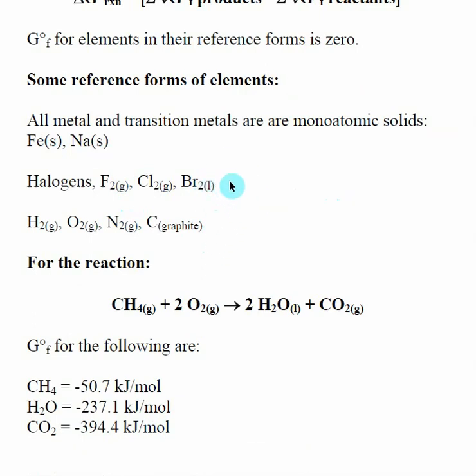For all metals and transition metals, they're just their monatomic solid. So the reference form for iron is iron solid. The reference form for sodium is sodium solid. And some of the outliers here for halogens, they are the diatomic F2 gas, Cl2 gas, and Br2 liquid.